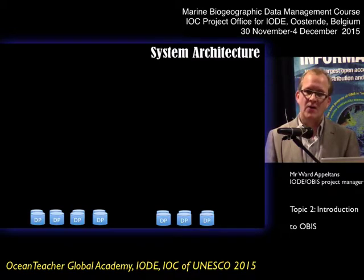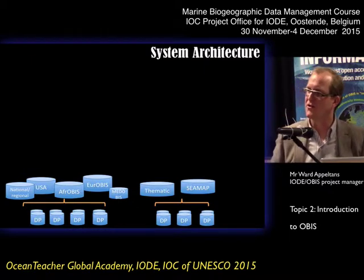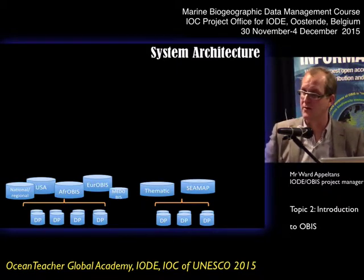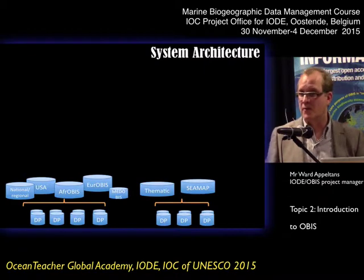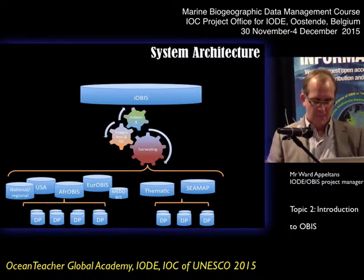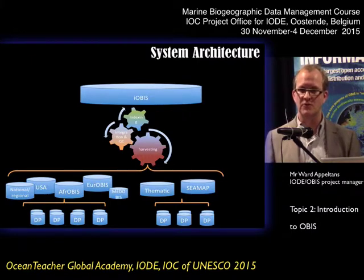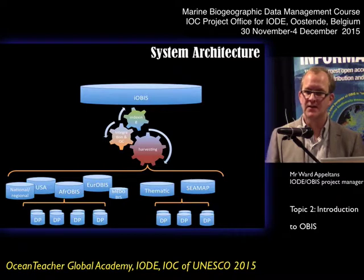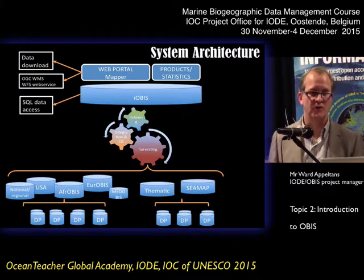In terms of system architecture, we have 500 data providers at the moment. They are in turn harvested or the data are integrated by national, regional or thematic OBIS nodes. The nodes receive the data — they can be in an Excel sheet, in IPT, in whatever format. They do all the processing and quality control. And then every three months we harvest the OBIS nodes, do the integration, a few QC steps, and do the indexing. Then we publish a new version of the database and make it available through the web portal — at the moment through the mapper — and we create a number of products, maps, and statistics.